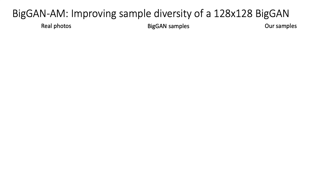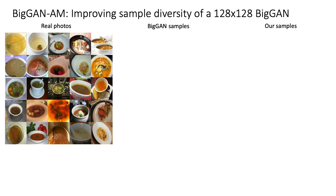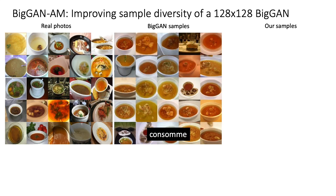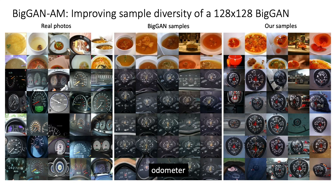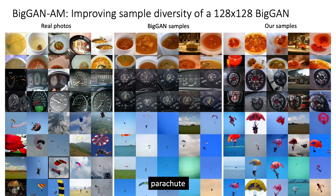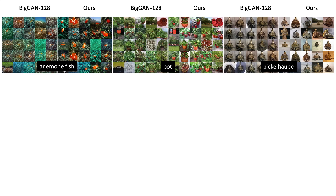Our method also generalizes to other BigGAN models. For example, a BigGAN at a lower resolution of 128×128. Compared to the real photos, BigGAN samples can be homogeneous, but our samples are more diverse — for odometer, parachutes, and many other classes.